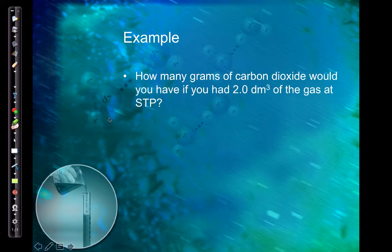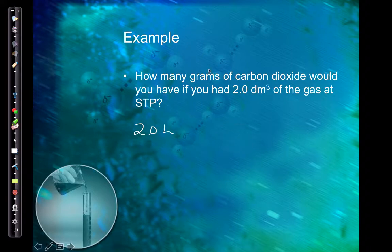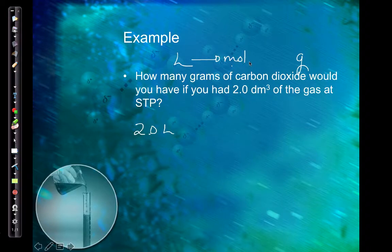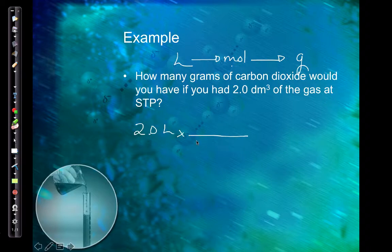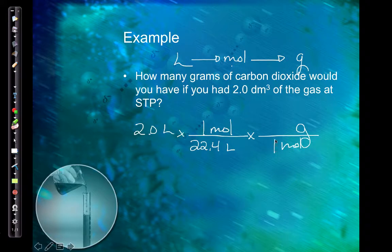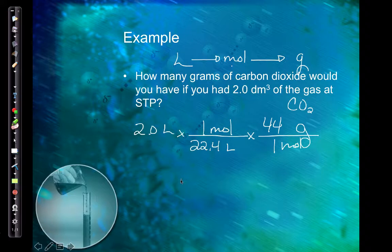How many grams of carbon dioxide would I have if I had 2 dm³ of the gas at STP? Remember, a dm³ is a liter, so I have 2 liters. I'm going from liters to grams. Since it's a gas at STP, 22.4 liters equals 1 mole. Then use the molar mass — 1 mole equals 44 grams for carbon dioxide, from 12 plus 32 for oxygen. That gives me 3.9 grams.